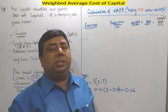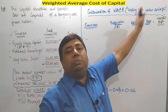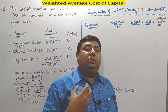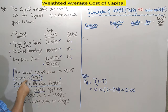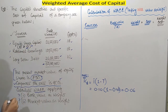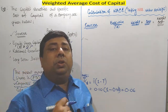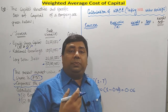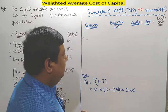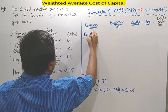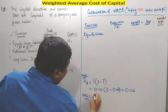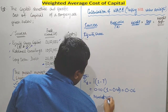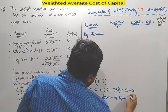Now we are going to solve the same question considering market value instead of book value. The key difference: the present market value of equity share is Rs. 90, whereas the book value per share is Rs. 10. The thumb rule is you have to convert your equity capital from book value to market value. The first source is equity share capital, and we calculate the market value of equity shares.